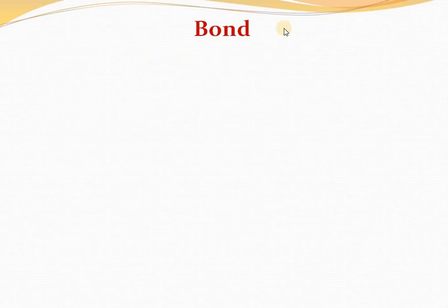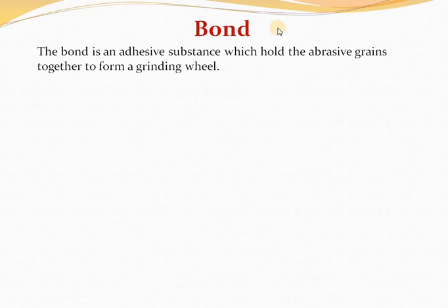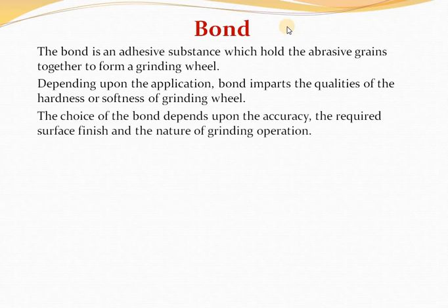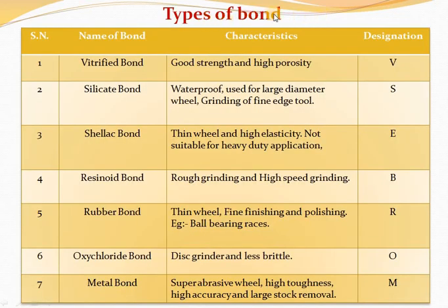Next हमारे पास है bond। Abrasive grains को जोड़ने के लिए जो material use होता है उसे bond कहते हैं। Bond सारे grains को एक जगह जोड़कर रखता है — जैसे lathe machine पर tool post tool को पकड़ता है, वैसे ही grinding wheel पर bond abrasive grains को पकड़ता है। The choice of bond depends upon the accuracy, required surface finish and the nature of grinding operation.